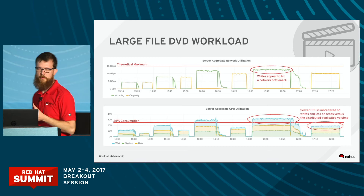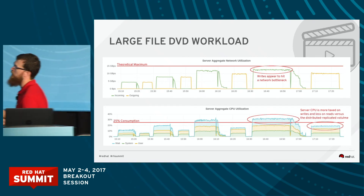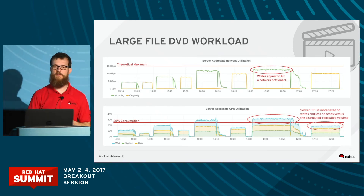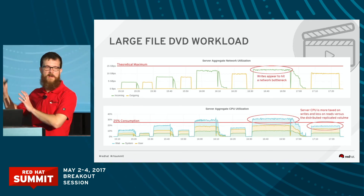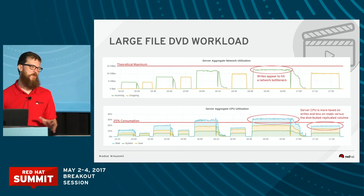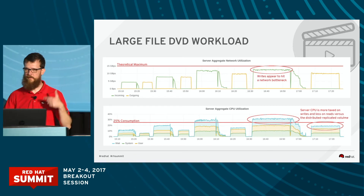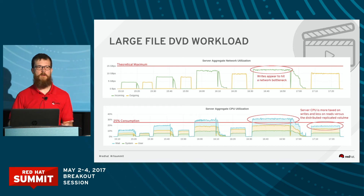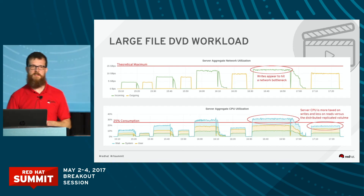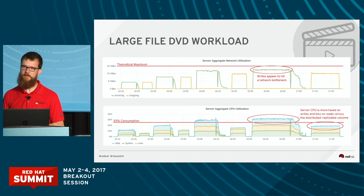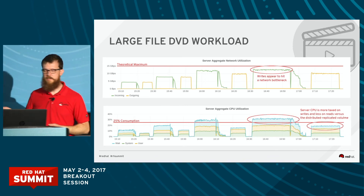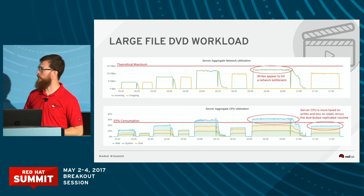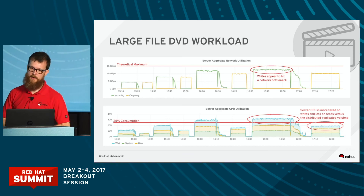When we look at the network, mostly we're staying well below. But you will find that we do appear to start bottlenecking on that network once that client concurrency gets high enough. We're not quite hitting a line, but that's because this is a network and there's a lot of iffy overhead going on there. We have enough data to say we believe we are constrained to the network on our write operations, but our reads still have a little bit of room to grow.